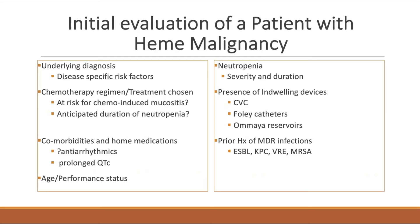Review home medications for potential drug-drug interactions with medications you would like to give. One particular interaction to be aware of is QTc-prolonging medications and azoles, which are very frequently used for antifungal prophylaxis during neutropenia. Also note indwelling catheters such as central venous lines, Foley catheters, and Ommaya reservoirs in patients with CNS involvement — important to document for future CNS symptoms.